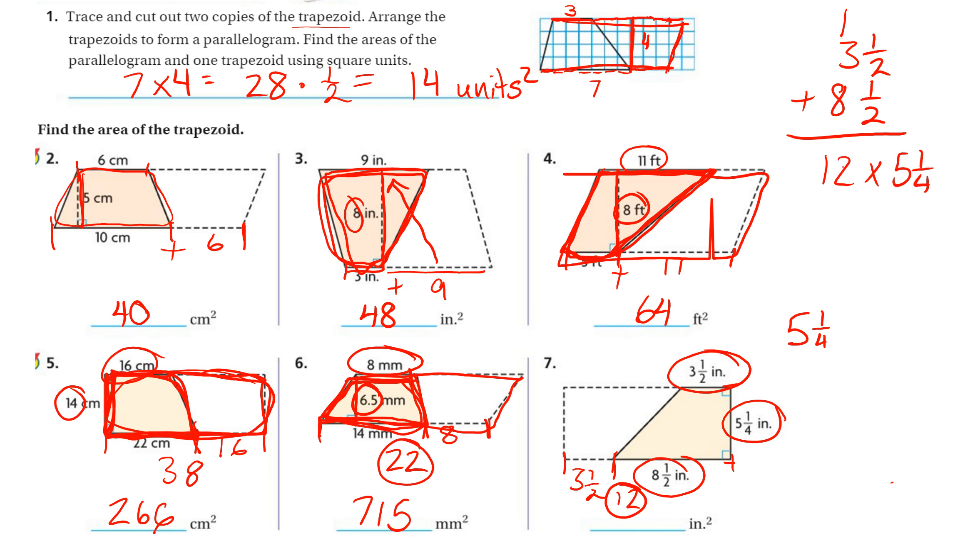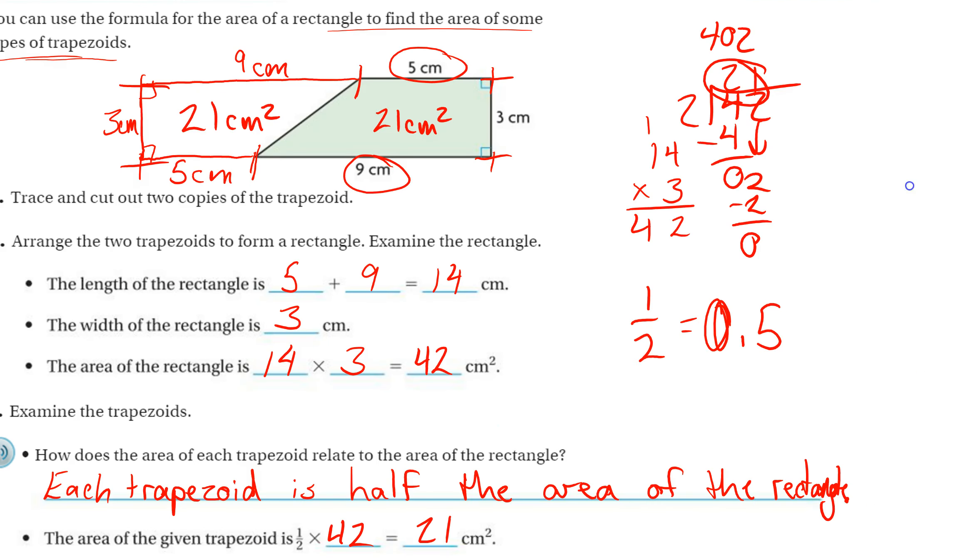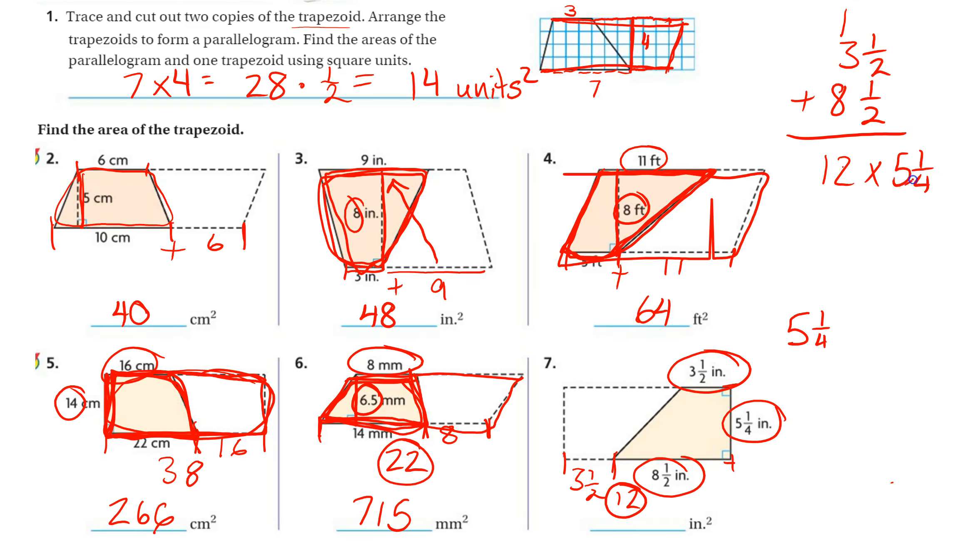You can change that 1 fourth to a decimal. You can change 5 and 1 fourth to an improper fraction any way you want. So I'm going to change it to an improper fraction. To do that, I multiply 5 times the 4 to get 20, plus the 1 is 21 fourths. And then I'm multiplying that by 12, and I'm going to rewrite 12 as 12 over 1.